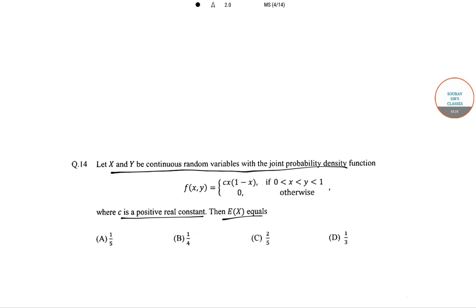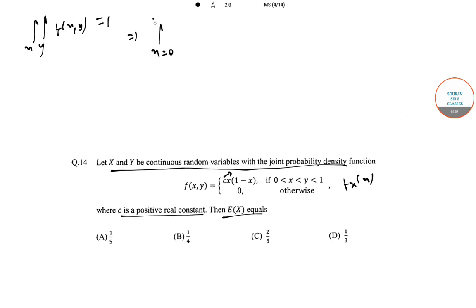To find E(X), we need the marginal density function f_X(x). Before that, we need the value of c. We know that integrating the joint PDF over the limits of x and y gives 1. So the double integral from x = 0 to 1 and y from x to 1 of c × x × (1 - x) dy dx = 1.